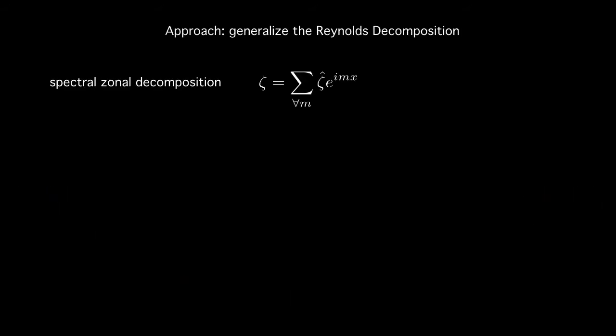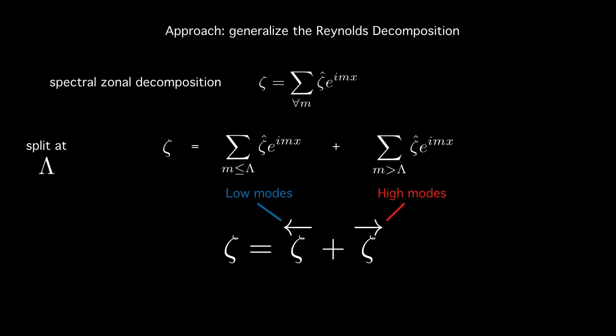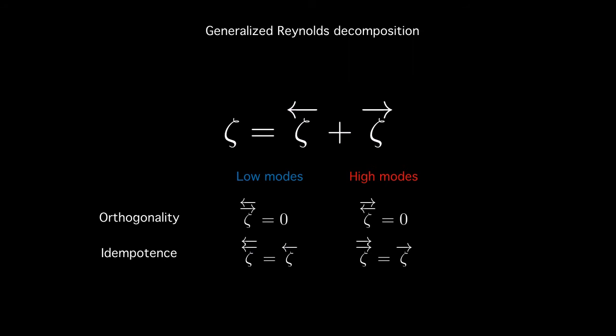So to get to this middle zone the first thing we do is generalize the Reynolds decomposition. Think of the vorticity field in terms of its spectral decomposition in its zonal modes. Now instead of taking the average in fluctuation or splitting the field into its average in fluctuation, we project the series into low modes and high modes using a filter at cutoff lambda. All the modes that are less than the cutoff wave number are called low modes and the remaining ones which are higher than lambda in wave number are high modes. So we use new notation to depict this decomposition. So zeta is a summation of low modes that is zeta left plus zeta right which denote the high modes. Now interestingly this projection to low and high modes also follows the same properties as the average in fluctuation case.